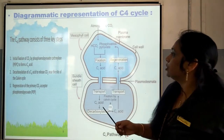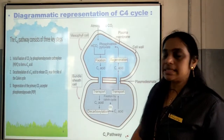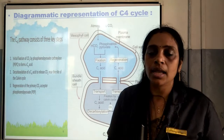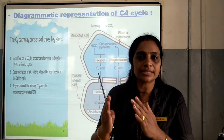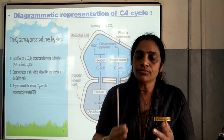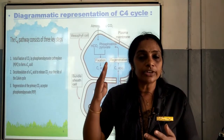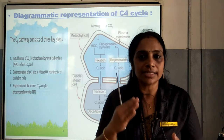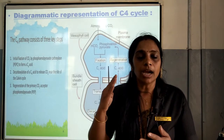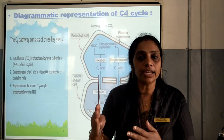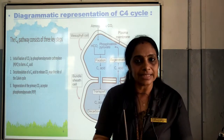Here again is a dynamic representation of C4 cycle. If you go through this cycle, it is easy to understand. Only you have to understand that two cells take part in C4 cycle: mesophyll cell and bundle sheath cell. Number two, you have to find out the first stable product which is oxaloacetic acid. Next, the primary acceptor for the carbon dioxide is bicarbonic acid, which combines with phosphoenol pyruvic acid for the formation of oxaloacetic acid.